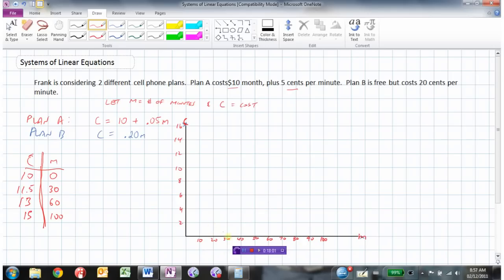So when the minutes are 0, the cost is 10. When the minutes are 30, the cost is 11.5, about there. When the minutes are 60, the cost is 13. And if you talk for 100 minutes, 15. So this would be the graph of Plan A.